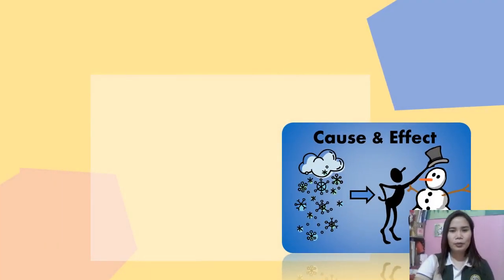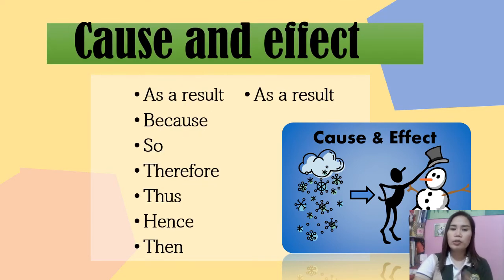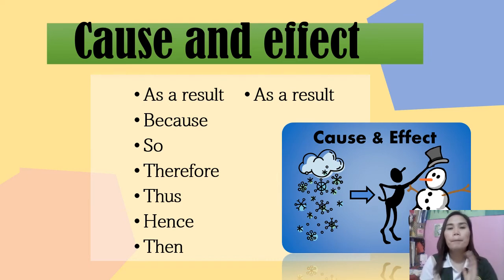Next, cause and effect transitions. Examples include: as a result, because, so, and many more. Cause and effect transitions signal that a writer is going to describe a result or effect — they tell us what will happen because something else happened.